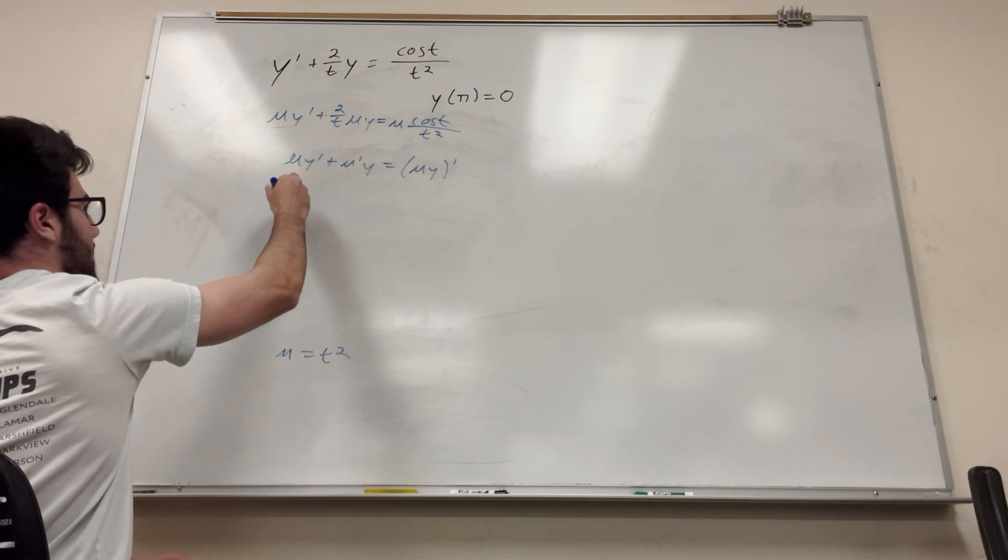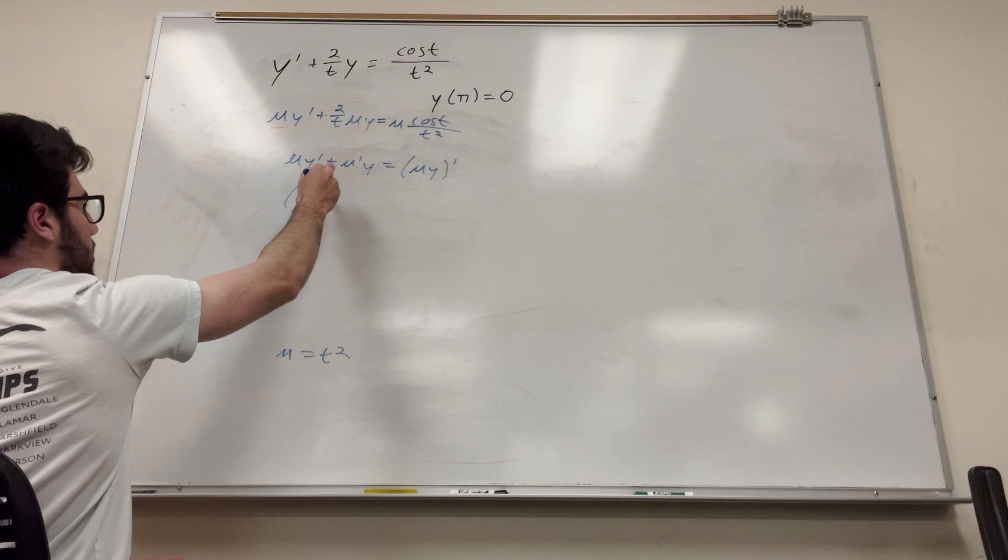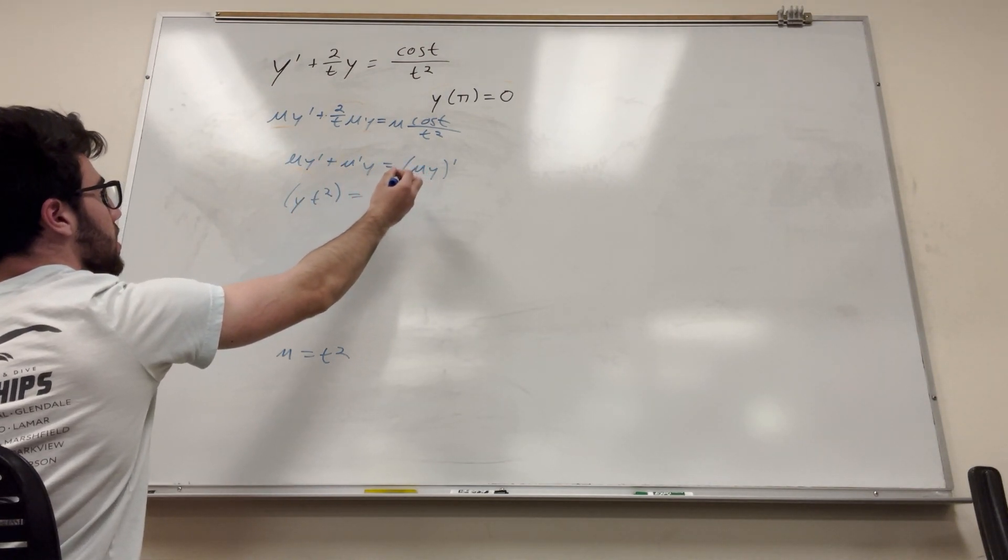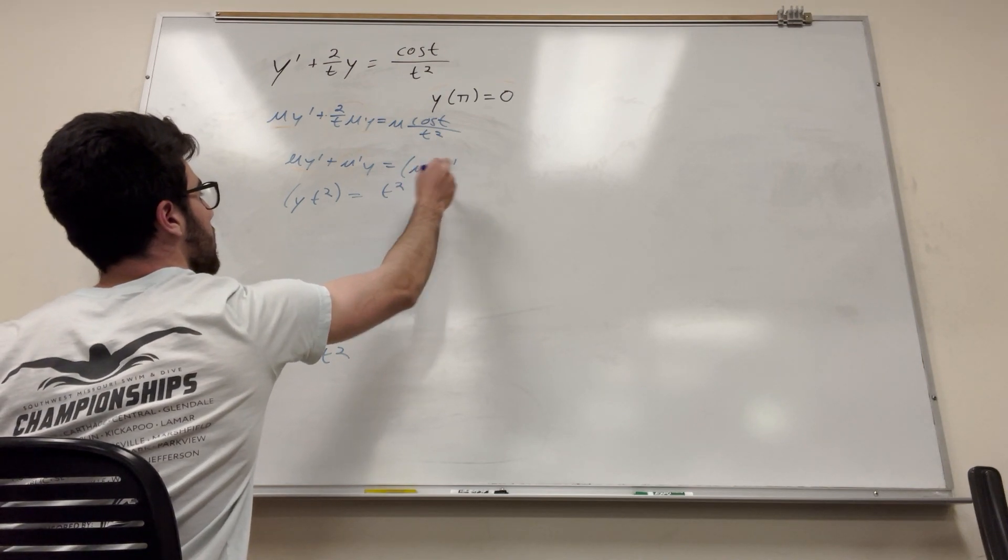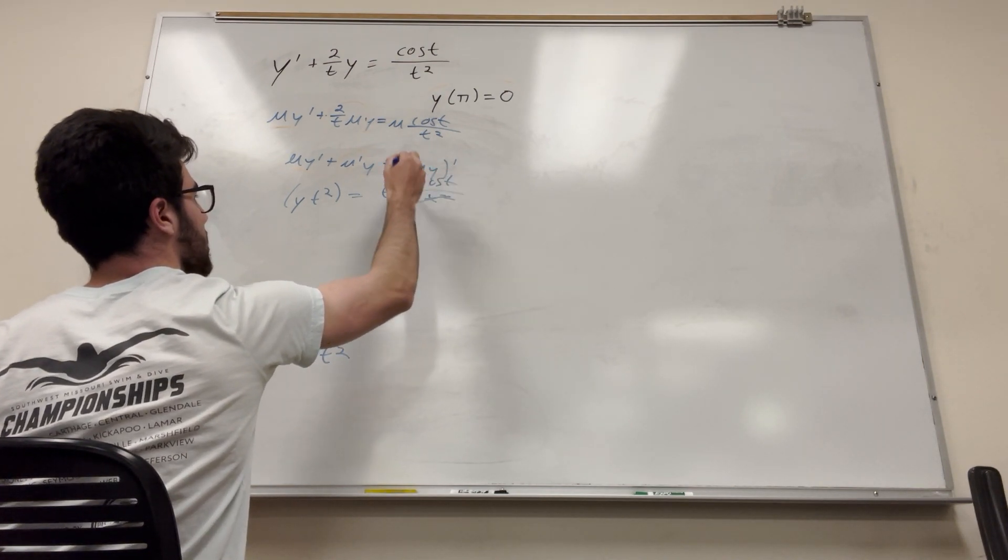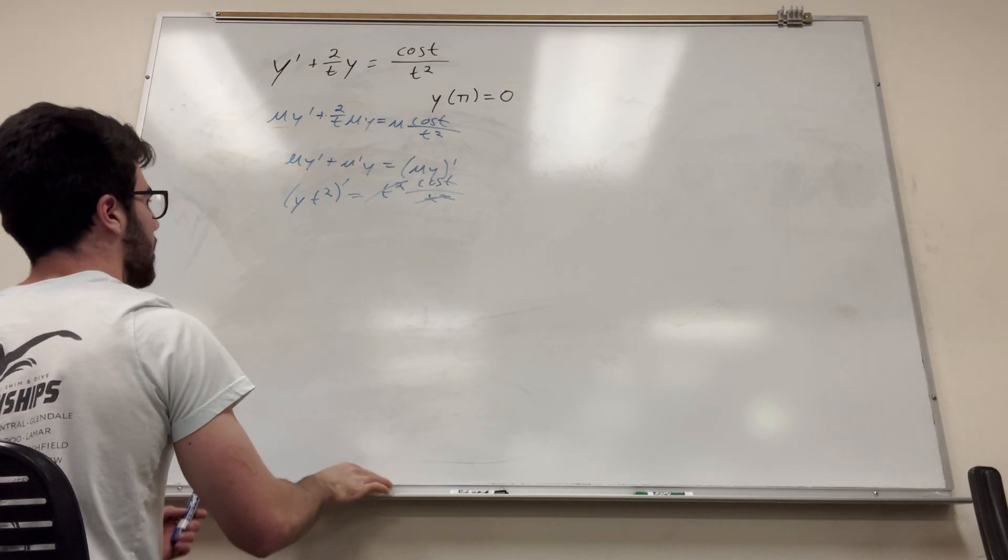Okay, so we have this now. So we can just say that y times mu, so t squared, is equal to, so that's going to be t squared cosine of t over t squared. Awesome, watch this. Cancel, cancel, boom. And this is prime. I forgot that.